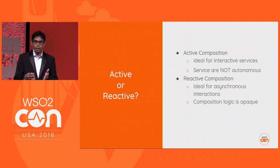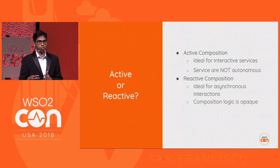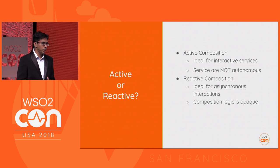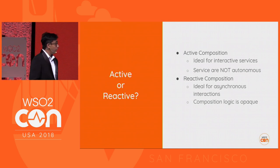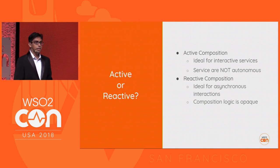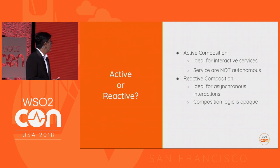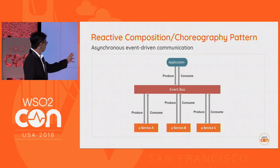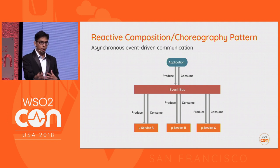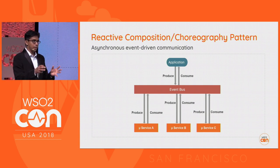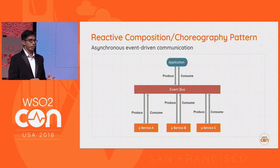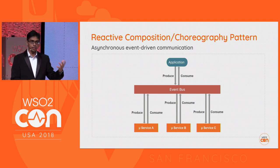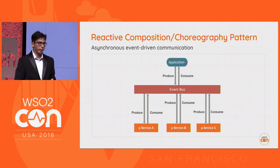Reactive composition — in many articles and books it is positioned as the only way of doing microservices communication. But it is ideal for asynchronous messaging; when it comes to composition logic, it is not that visible. For example, in this diagram, one service is publishing messages to the bus and another is consuming them. There is no single place you can deduce your integration or composition logic. You need complex observability tools to understand the business logic behind your services.